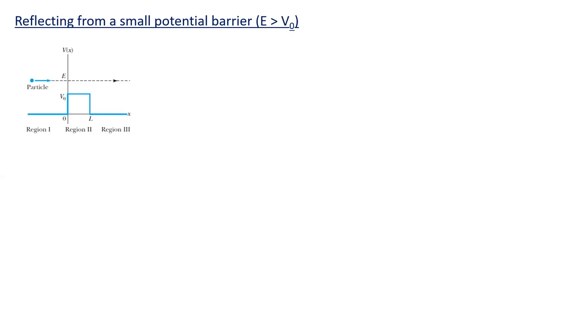We start off with reflecting from a small potential barrier. Here's an example where we have a particle moving in from the left with a certain amount of energy. In region one it has plenty of energy, and then it hits a region of potential, but the potential is less than its total energy. The difference between its total energy and its potential energy would be kinetic energy, which is positive and allowed. So the particle would pass over this barrier classically. You can think of it kind of like rolling a marble over a hill, although this hill is not rounded — it's square.